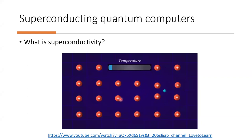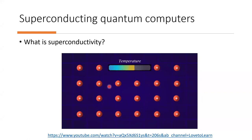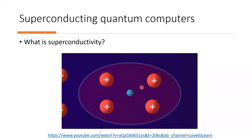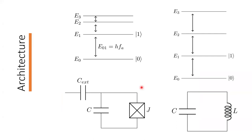Below a certain critical temperature, the lattice does not vibrate as much. Therefore, electrons due to opposite charges attract the nuclei of the atoms and create a region of positive charge. This region attracts another electron, forming what is called a Cooper pair. The Cooper pair is what is responsible for the phenomenon of superconductivity.